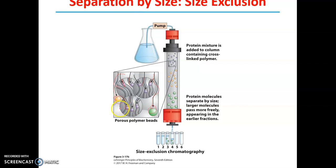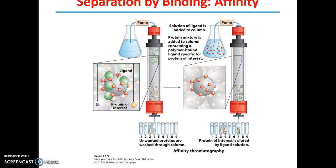That is why it is called size exclusion: the smaller molecular weight compounds actually remain more in the matrix in the column than the heavier molecular weight proteins. In normal size chromatography, the heavy molecular weights remain at the top while lighter ones migrate faster, but in exclusion chromatography the reverse is true. Larger molecules pass more freely and appear in the earlier fractions.